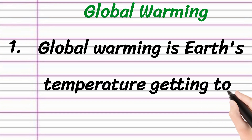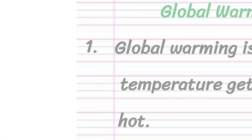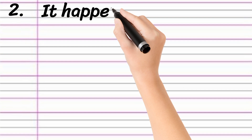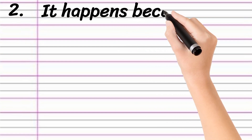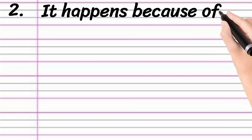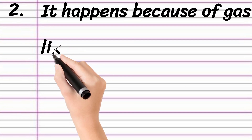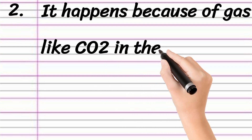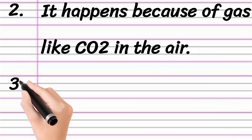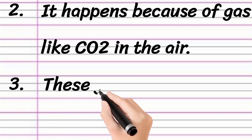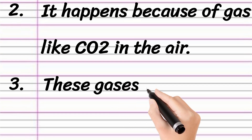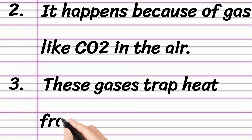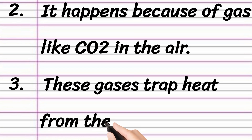Global Warming is the Earth's temperature getting too hot. It happens because of gases like carbon dioxide. These gases trap heat from the sun.